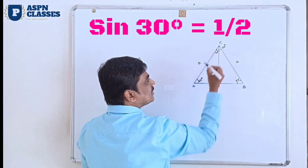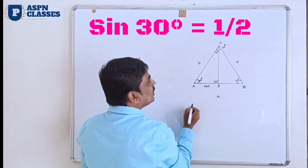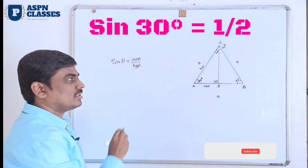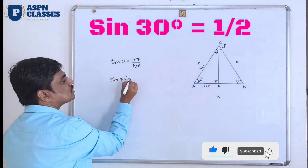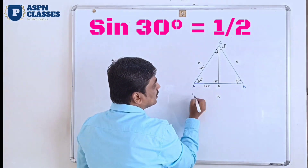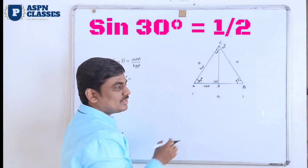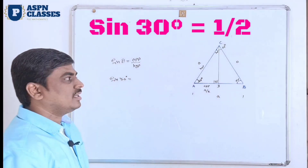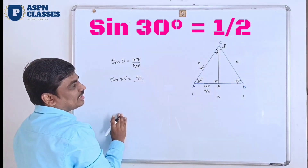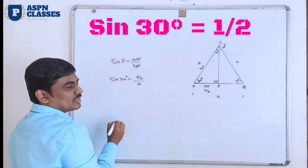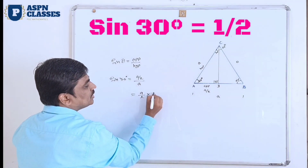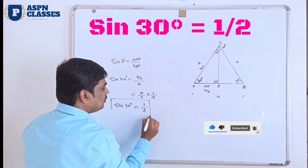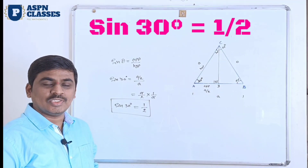First, we have the sin theta formula: sin theta is opposite divided by hypotenuse. This is 30 degrees, so the opposite side is this side and the hypotenuse is this side. Sin(30°) equals opposite divided by hypotenuse. The perpendicular bisector divides BC into a/2, so the opposite side is a/2 divided by hypotenuse a. That gives a/2 times 1/a, and a cancels, leaving 1/2. So sin(30°) = 1/2. This is the answer.